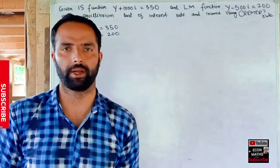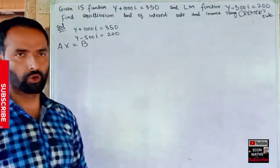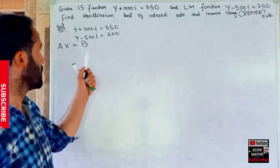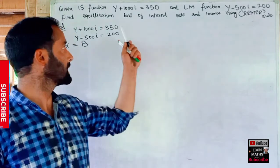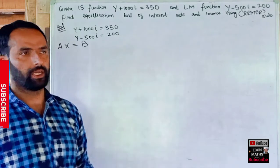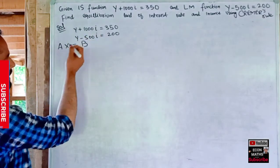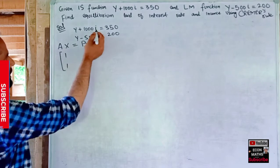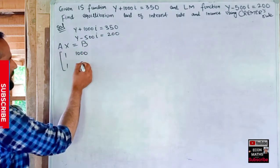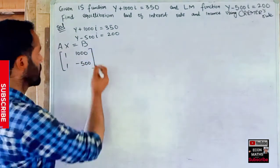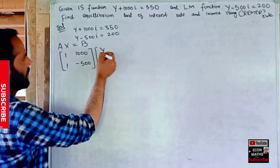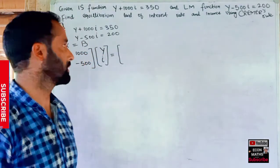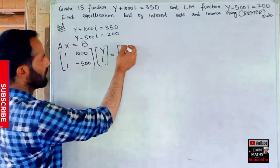We write this as AX = B, where A is the coefficient matrix — the coefficients of Y and I — X is the solution vector of the variables we need to find, and B is the vector of constant terms, that is 350 and 200. The coefficient matrix has entries 1 and 1000 in the first row, and 1 and −500 in the second row.